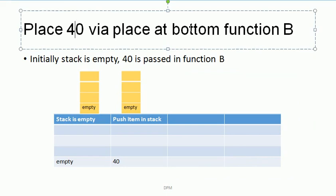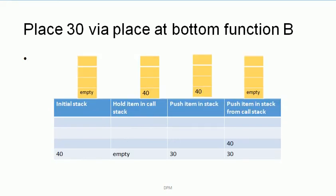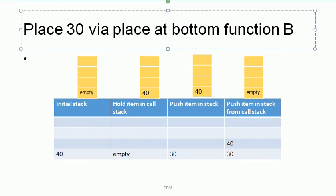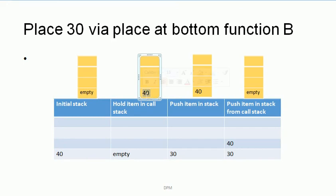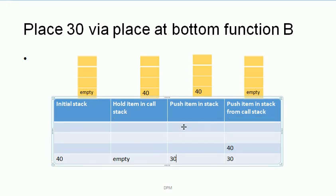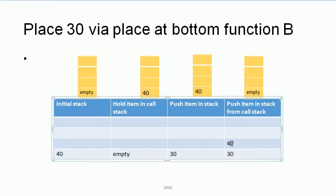First, 40 is passed to Function B. At that time our stack is empty, so 40 is simply pushed into the stack. Now 30 comes to Function B. At that time the initial stack contains 40, so first 40 is popped from the stack, then 30 is placed at the bottom of the stack, and after that 40 is taken from the call stack of B and pushed to the top. So now our actual stack looks like 40, 30.